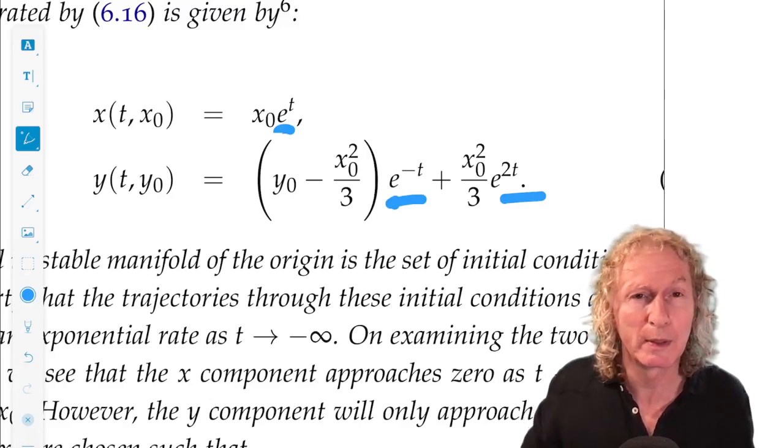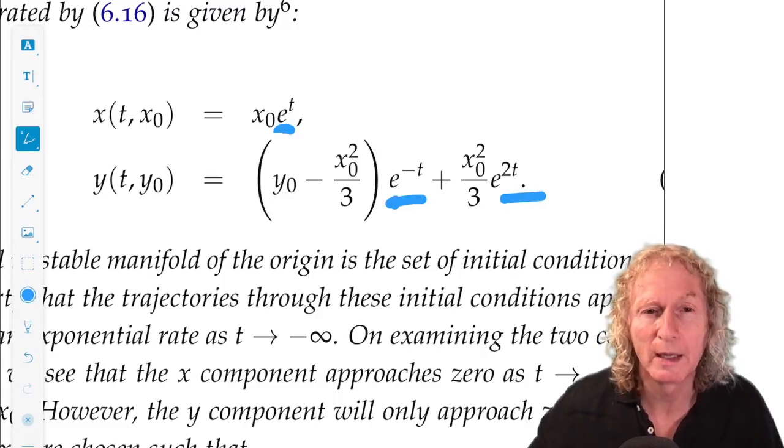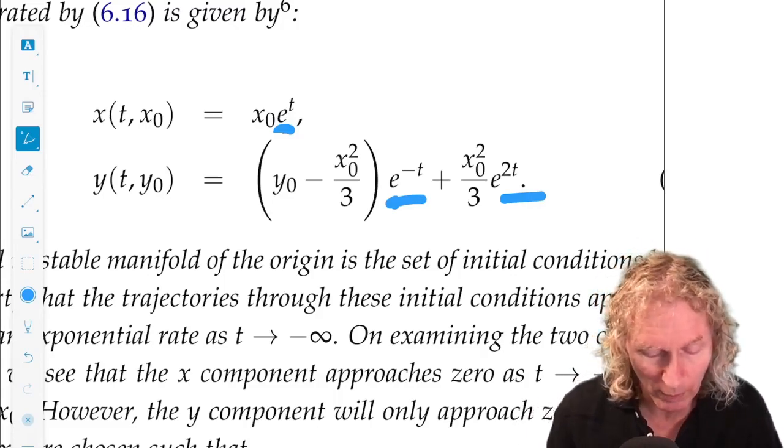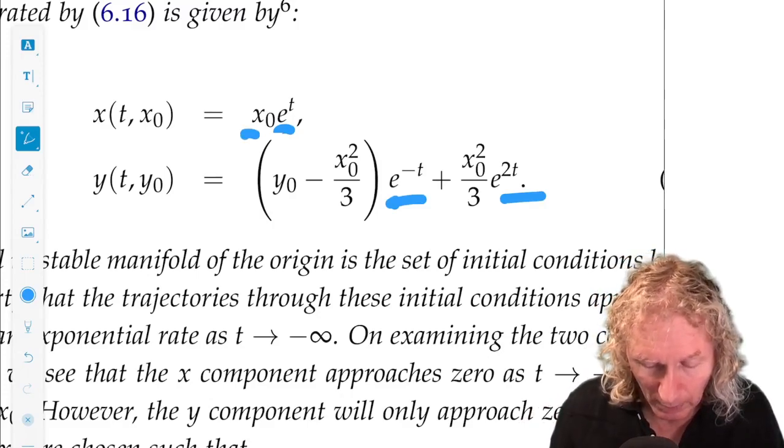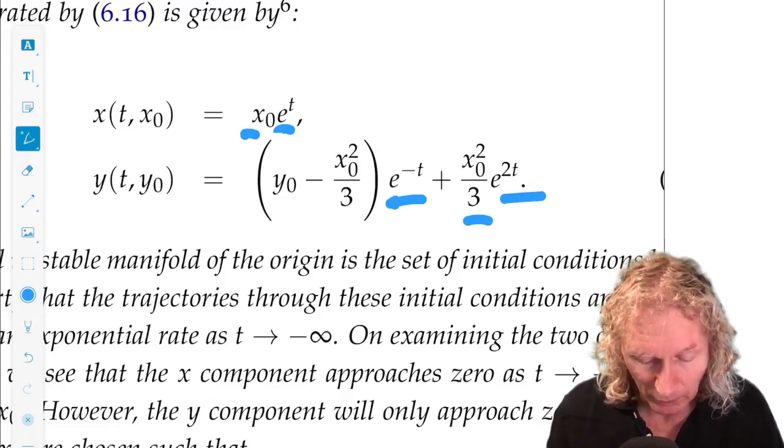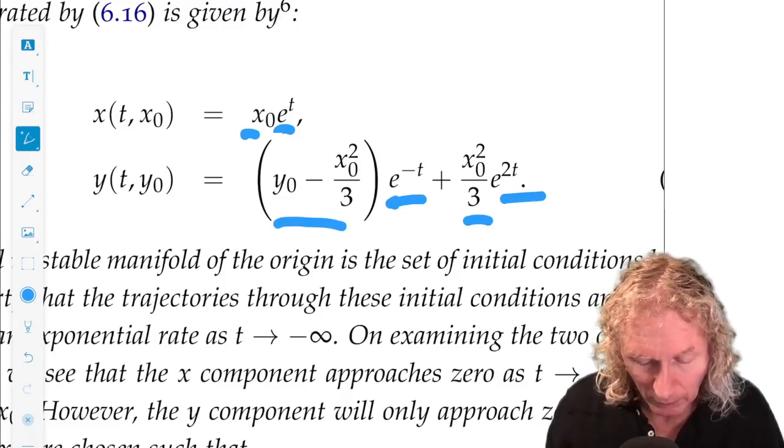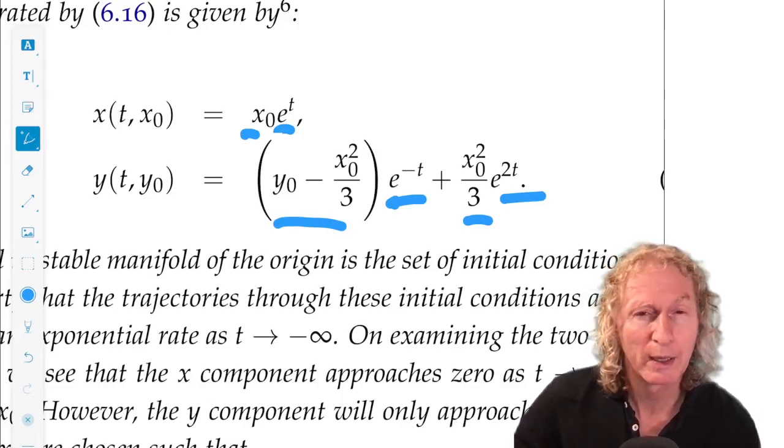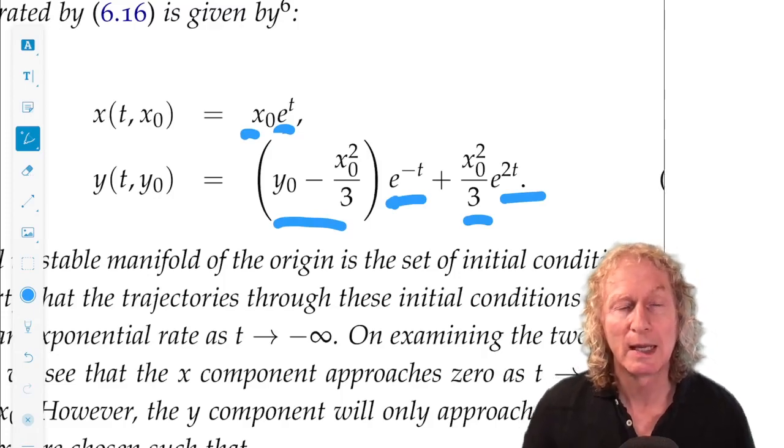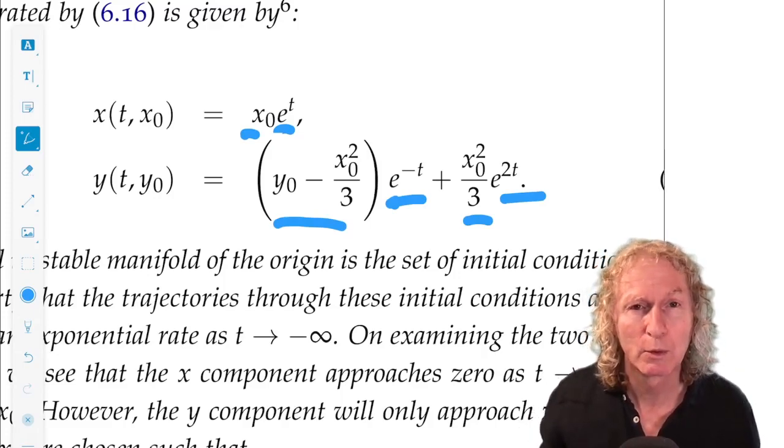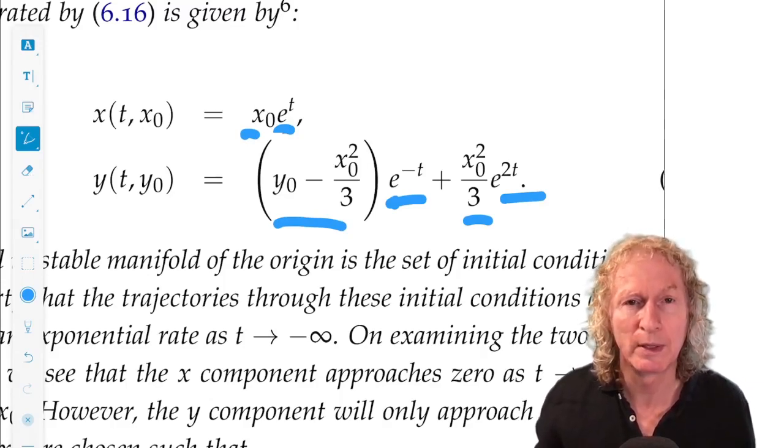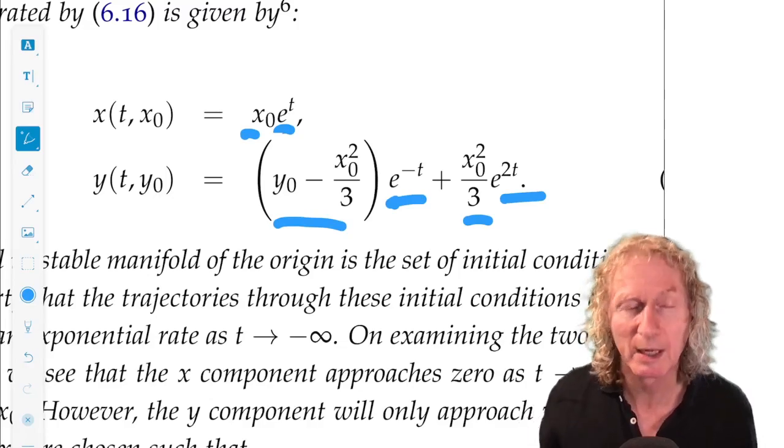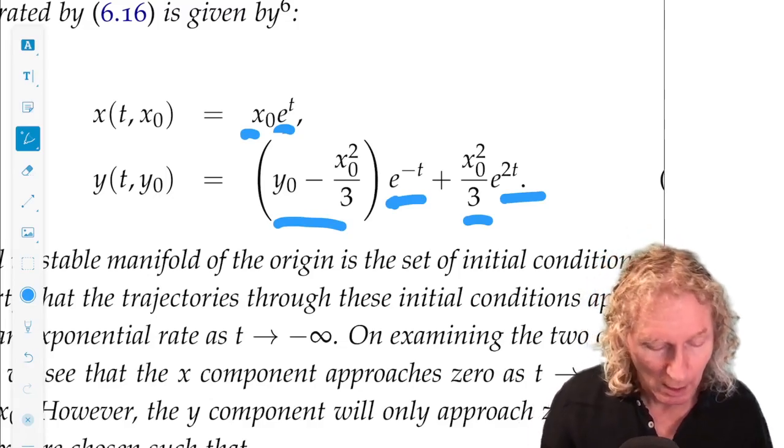So, the terms e to the 2t and e to the t, as t goes to infinity, they blow up. They go to infinity. So, the only way an initial condition could decay to zero at an exponential rate would be for x naught, the coefficient on those terms, to be zero. What about this? Well, it doesn't matter what this is, because e to the minus t does go to zero as t goes to infinity. So, x naught equals zero, and y naught anything are initial conditions that make up the stable manifold. And we knew that already. But now we're getting it from the trajectories directly.